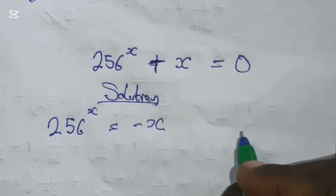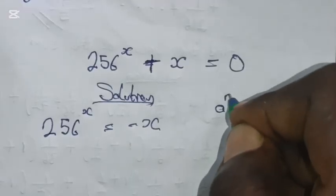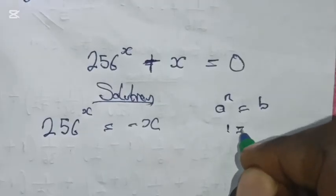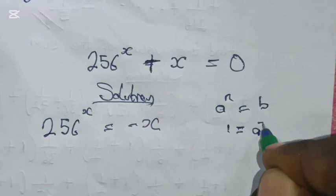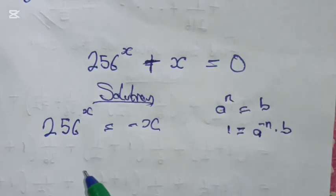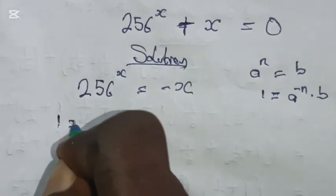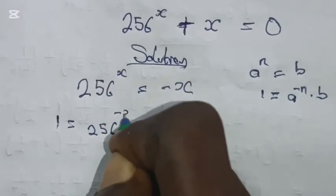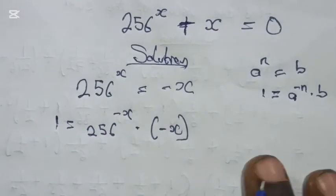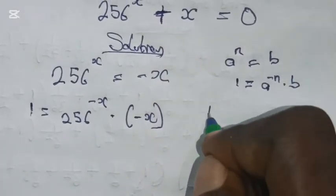Now using the property of indices: for instance, if we have a raised to the power of n equals b, we can say that 1 equals a raised to the power of minus n multiplied by b. So that's what we're going to use here — 1 equals 256 raised to the power of minus x multiplied by minus x.